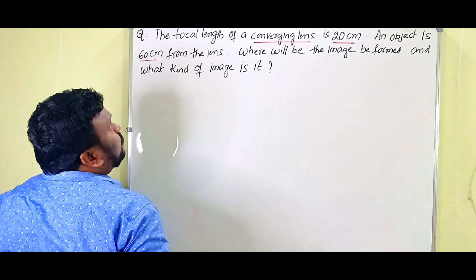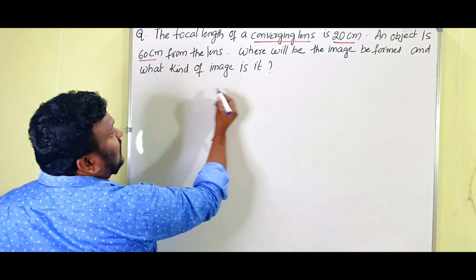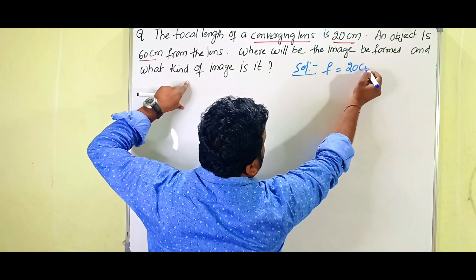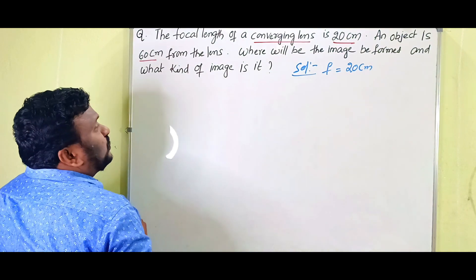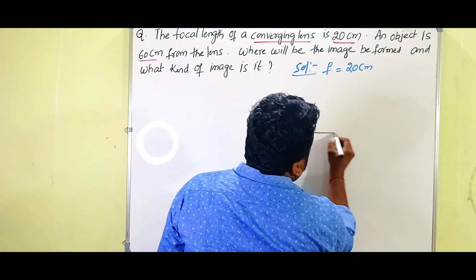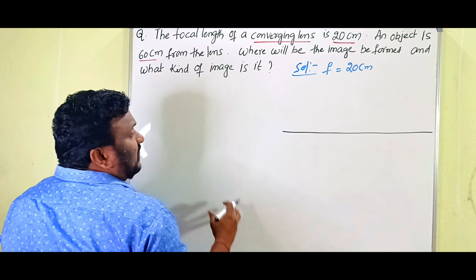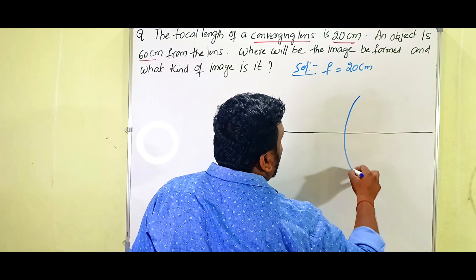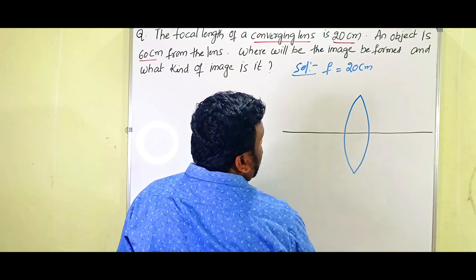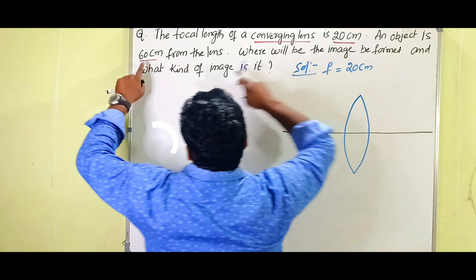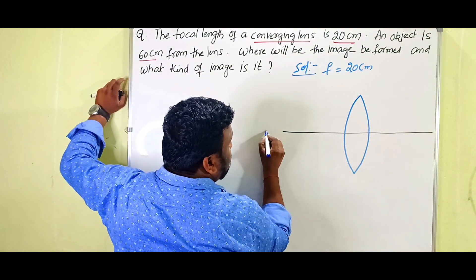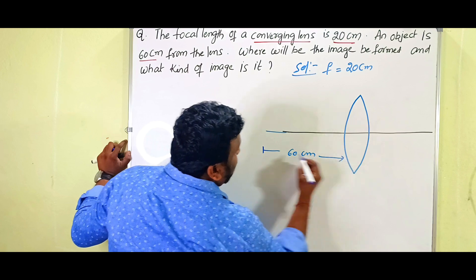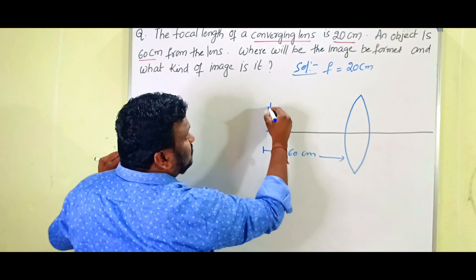In the solution, what is given first: focal length is 20 centimeters. To understand and solve any problem, first you have to draw a diagram — then only you may come to know what is actually in that problem. A converging lens is nothing but a convex lens. An object is 60 centimeters from the lens, so the object distance is 60 centimeters.